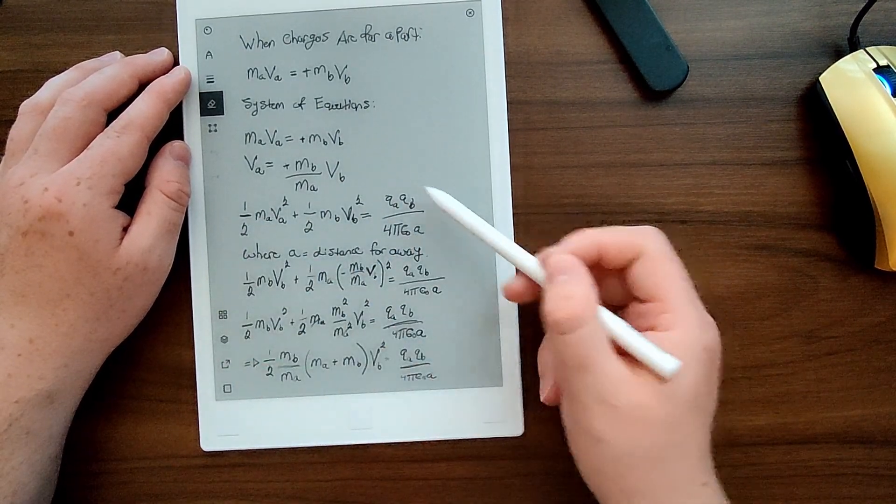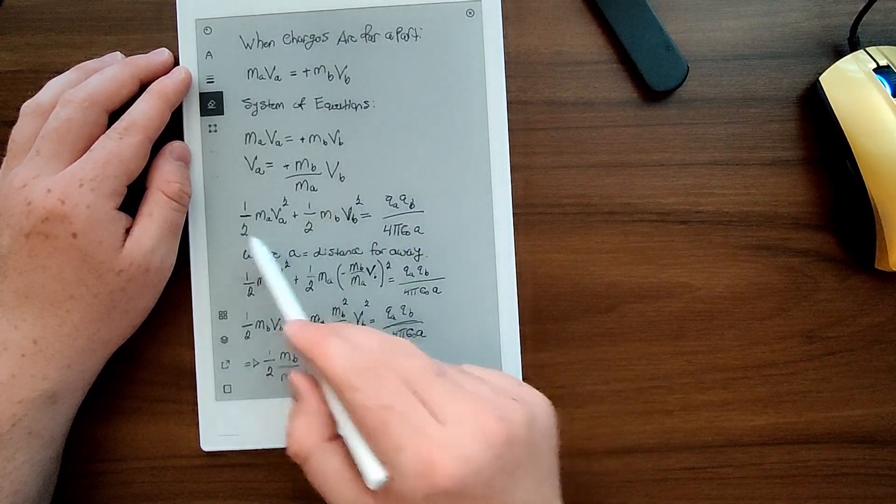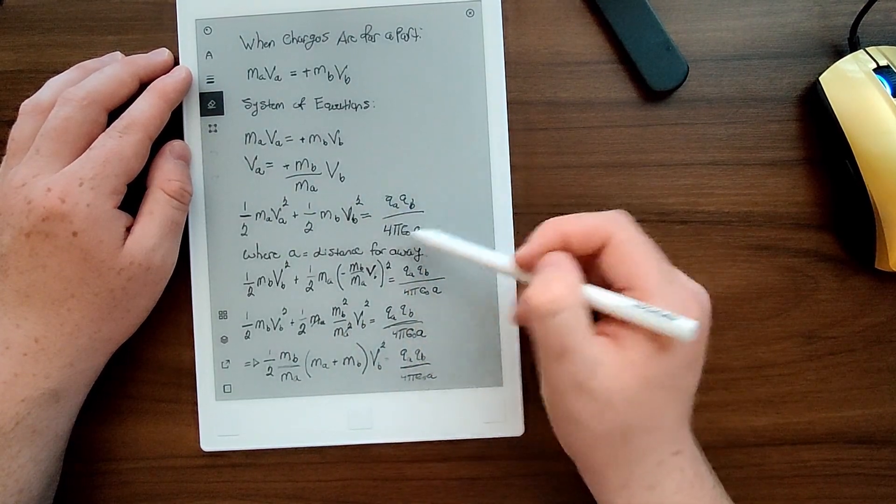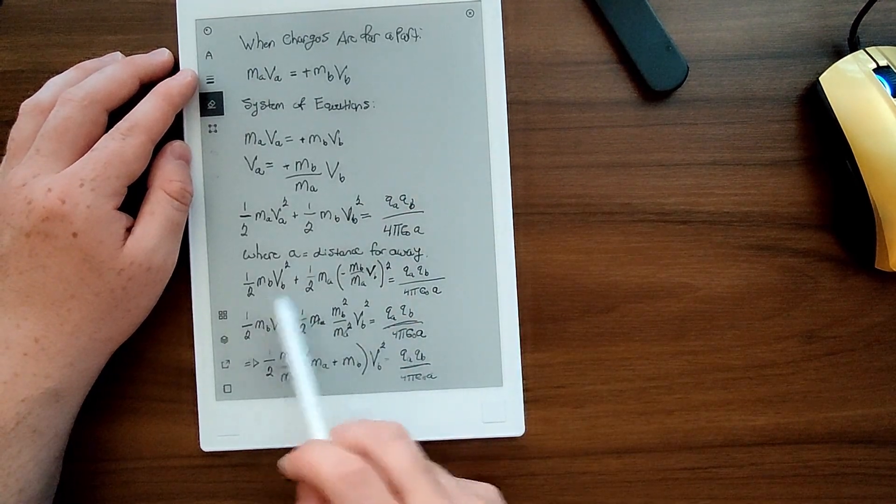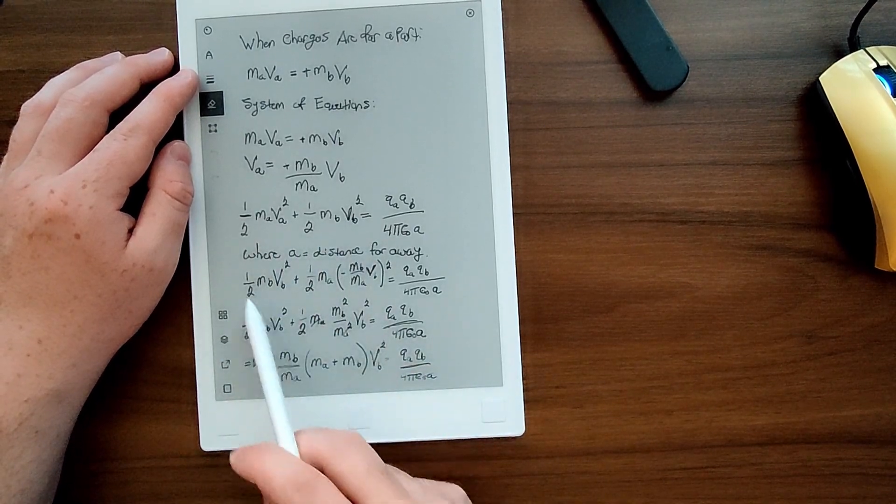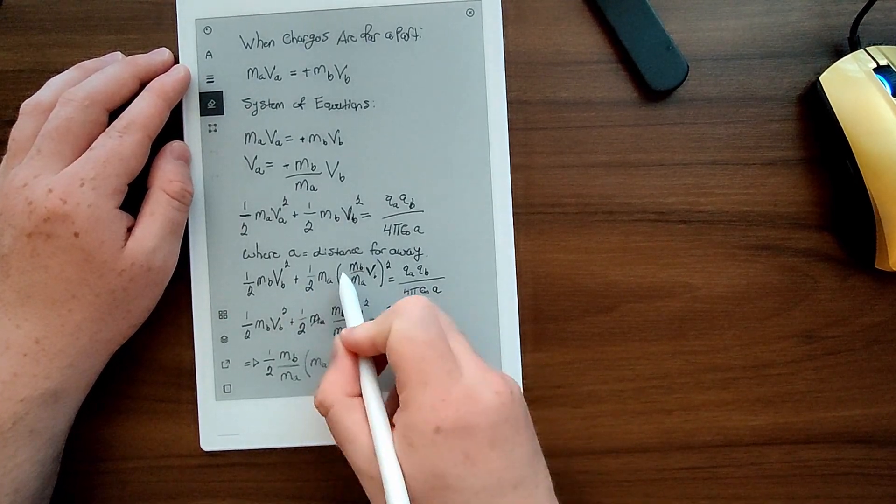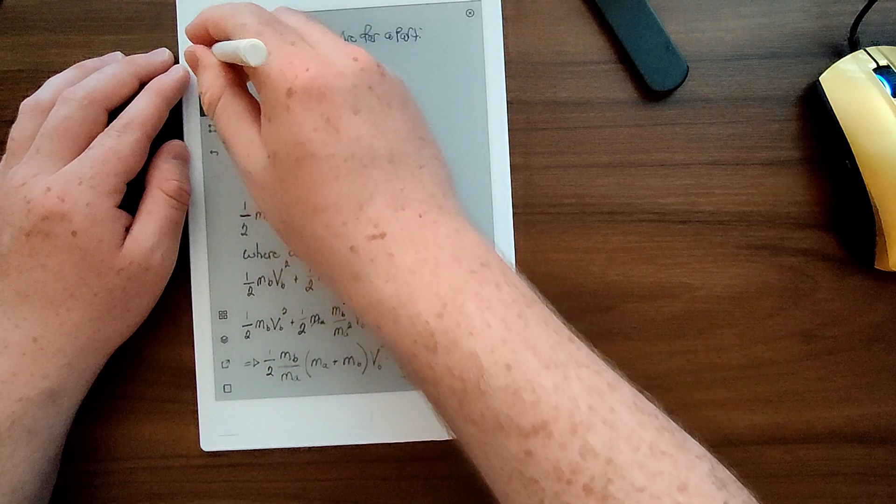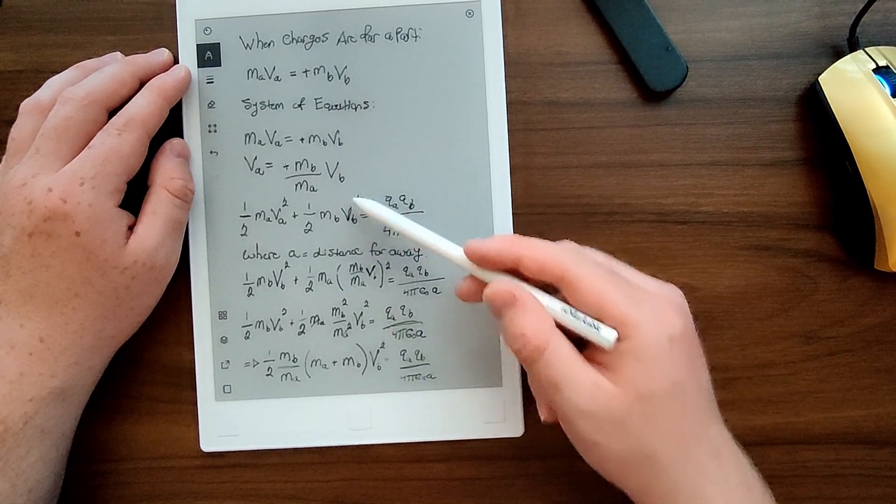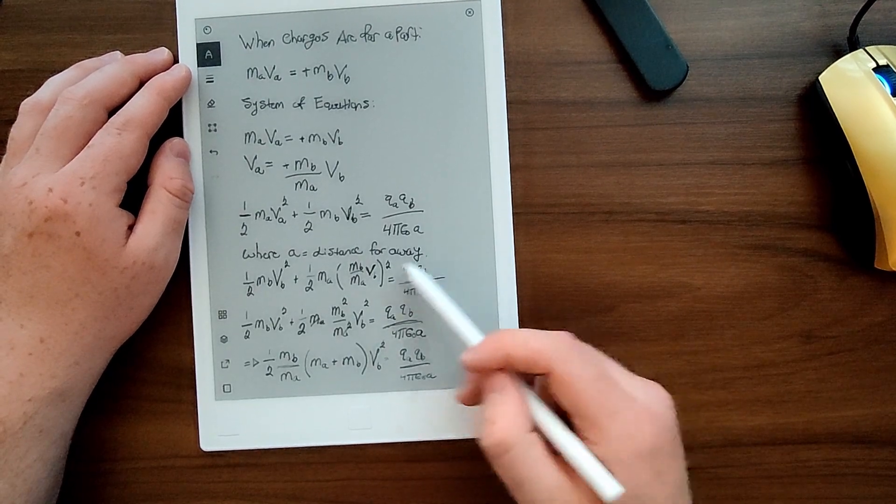And so 1/2 MA VA squared plus 1/2 MB VB squared. The sum of the kinetic energy is equal to the total potential energy in the beginning. If you plug in what we found for VA in terms of VB and to here, you get 1/2 MB VB squared plus 1/2 MA times positive. Forgot to fix that. MB divided by MA times VB whole squared. Because that's what VA is, so you whole square that, and set that equal to the other side.